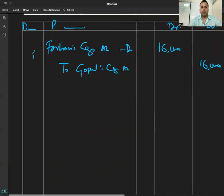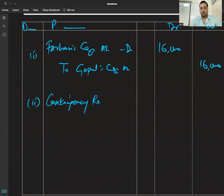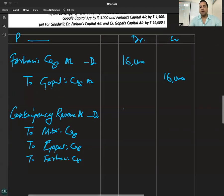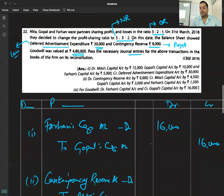Now there is one reserve and one loss. Reserve will be credited, we'll do separate entries. Reserve account debited — contingency reserve account debited to partners' capital accounts — 9,000 in old ratio 3:2:1.